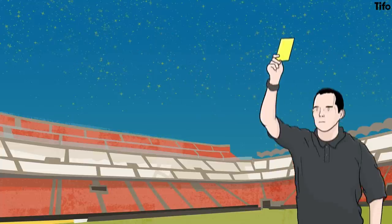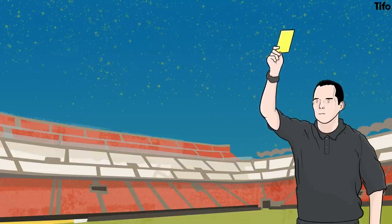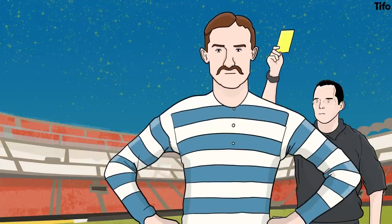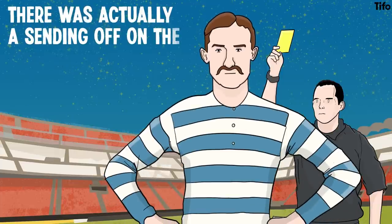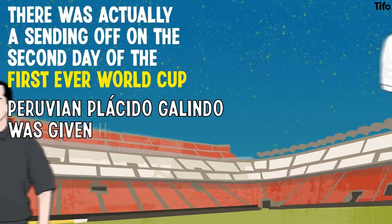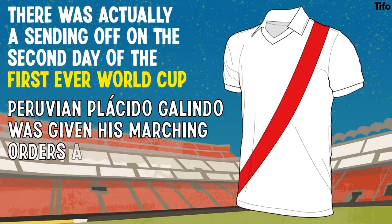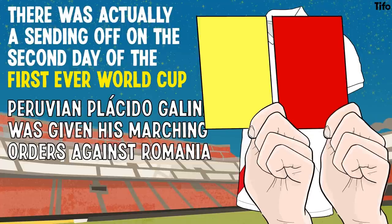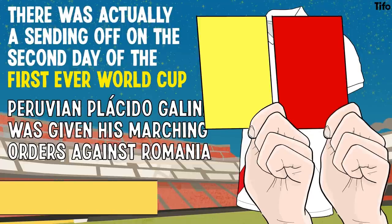The act of cautioning a player can be charted back well into the 19th century. In the 20th century, there was actually a sending off on the second day of the first ever World Cup in 1930, with Peruvian Placido Galindo given his marching orders against Romania. But the physical yellow and red cards weren't introduced into the game until 1970 as an experiment.